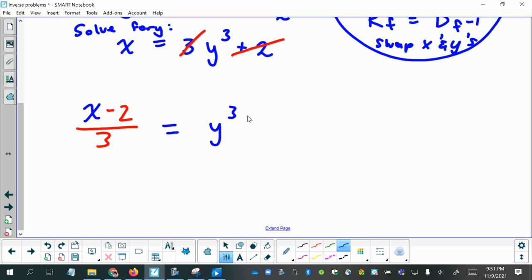And then, from there, to get rid of this exponent of 3, I can take the cube root on both sides.